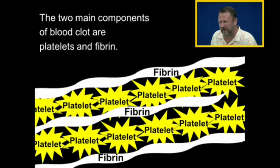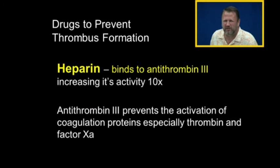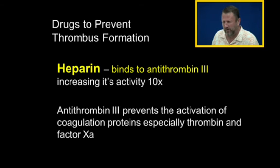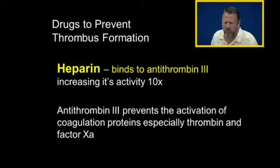Now we're talking about heparin. Heparin is an antithrombin activator. Heparin binds to antithrombin three. Antithrombin three prevents the activation of coagulation proteins, especially thrombin and factor 10a. Remember factor 10a was essential in converting prothrombin to thrombin, and heparin interferes with those steps. Antithrombin is a serine protease inhibitor, so any conversion of a coagulation factor that requires serine protease is inhibited by antithrombin three.